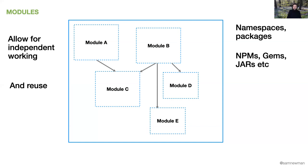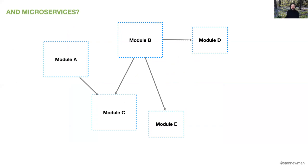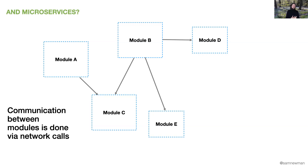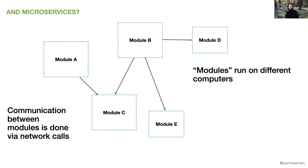You could argue that microservices are just a different form of modular decomposition. The difference is that rather than communication between modules happening on the same process and same computer, the communication is now happening over networks — network calls rather than in-process calls, which brings all the inherent joy of working on distributed systems. The modules are also typically running on different computers, giving further isolation, more team autonomy, and potentially limiting the impact of failure if we do these things well.